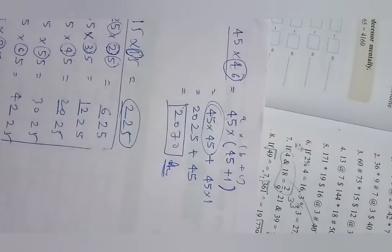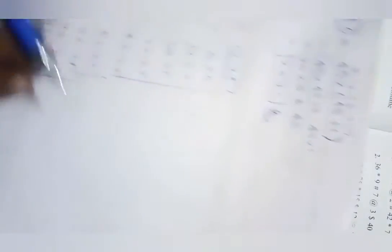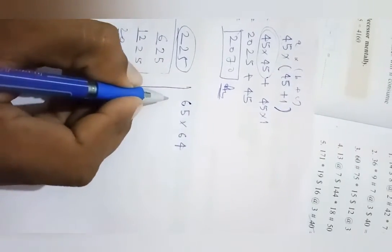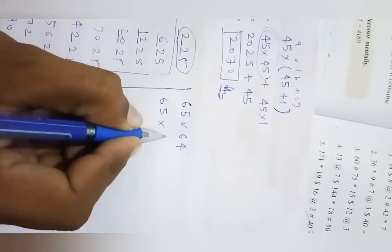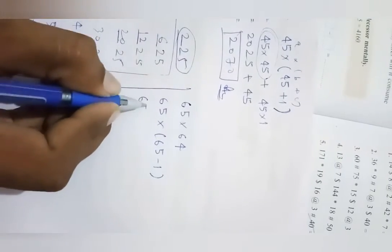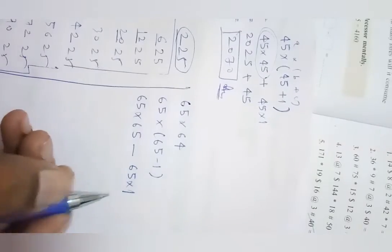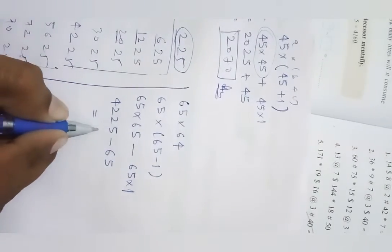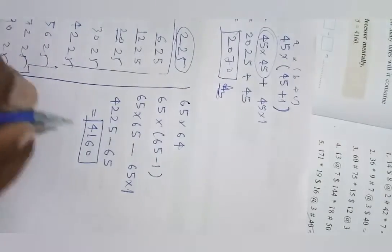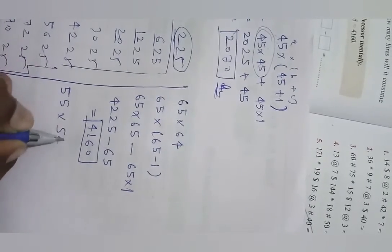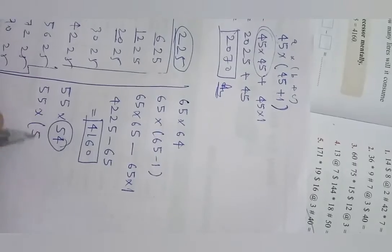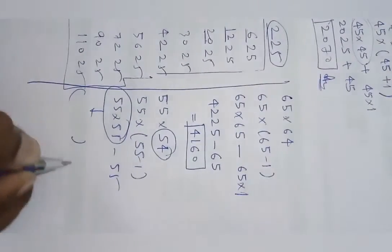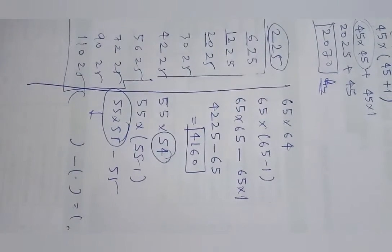The second type of question involves subtraction. For example, 65 into 64: you cannot add here, so break it as 65 into (65 minus 1). Multiply to get 65 into 65 minus 65 into 1. 65 into 65 is 4225, minus 65 gives 4160. Similarly, for question 7, which is 55 into 54: break it as 55 into (55 minus 1), giving 55 into 55 minus 55. Questions 7 to 12 are based on this subtraction method.